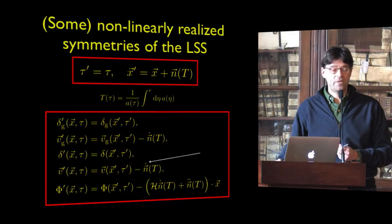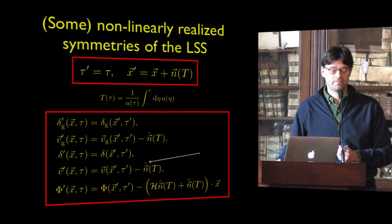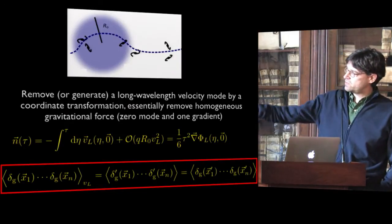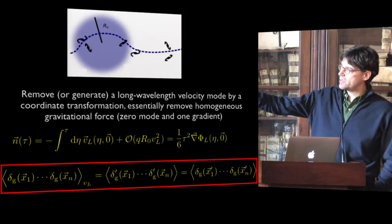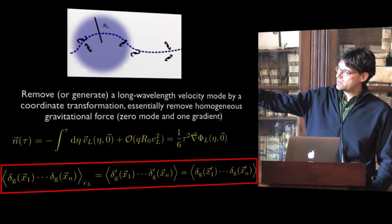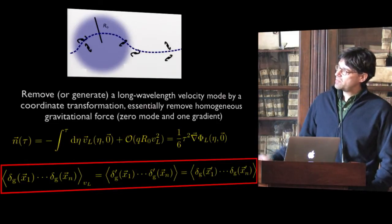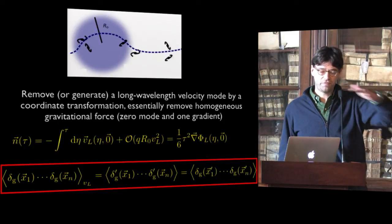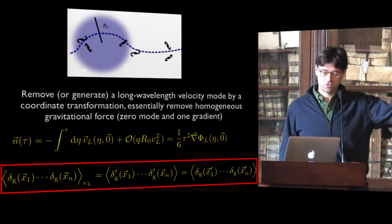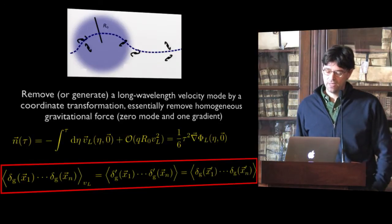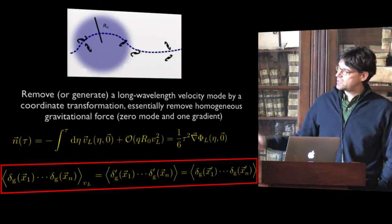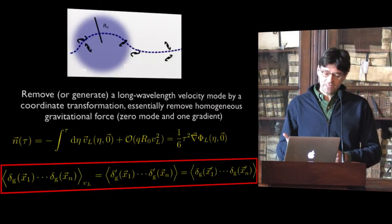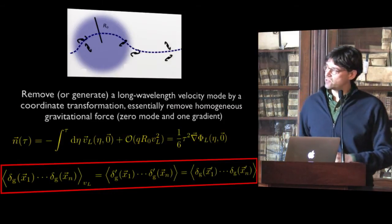This transformation tells you that you can go to a coordinate system where you eliminate the long wavelength velocity. Since this transformation is a symmetry, you generate another solution where in this coordinate system there is no perturbation on the long wavelength mode. So to compute the correlators of the true system where there is a velocity perturbation, you can change coordinate systems, kill the long wavelength mode, and compute the correlators in this simple way. This is basically a consistency relation that the system has to satisfy because of this underlying symmetry.